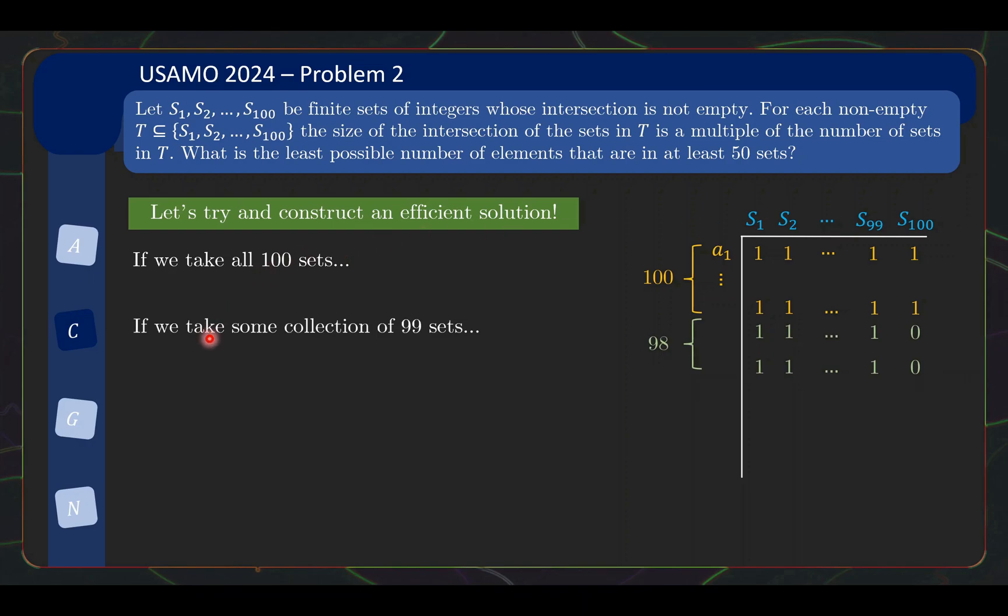So moving to the next level, if we then look at some collection of 99 sets, let's say S1 to S99. I currently have 100 common elements, but I need the number of common elements to be a multiple of 99. So the most efficient way, or rather efficient way for now is to just use 198 common elements. We add another 98 common elements to this collection of 99 sets. But we have to do this for every collection of 99 sets. So if, for example, if we now look at S1 to S100 except S99, again it has 100 common elements. We need to add another 98 common elements that belong to only these 99 sets. And we get 198 common elements. And in doing so, we do not violate the earlier 100 sets having 100 common elements.